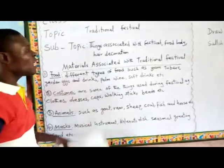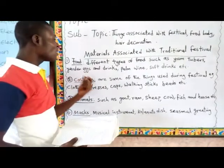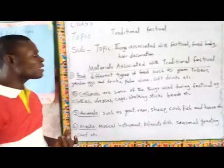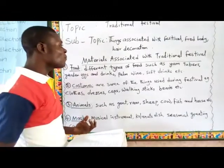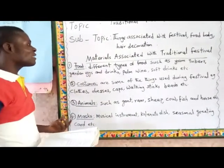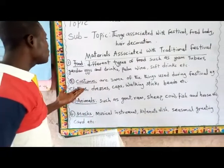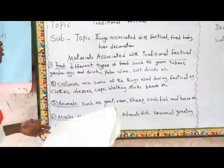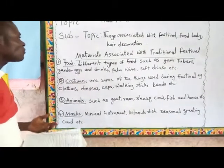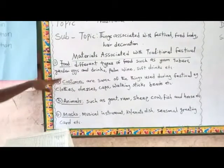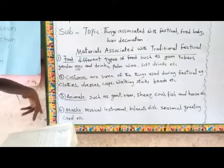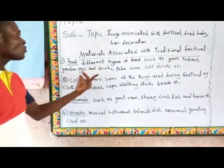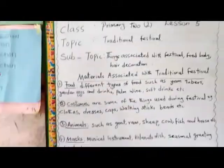Different types of food such as tuber of yam, drinks, palm wine, soft drinks, etc. Those are some of the types of food associated with festival. For example, during Salah festival, people often make sure they use soft drinks like Coke, and so many other soft drinks. Even some traditional festivals use pounded yam and similar foods. Those are the types of food associated with traditional festival.